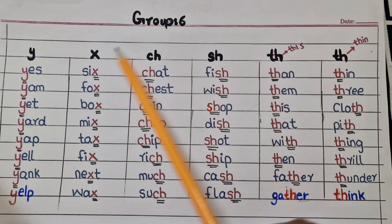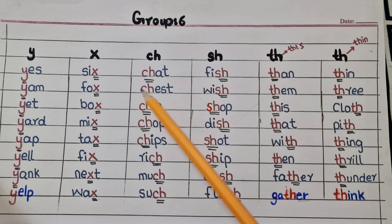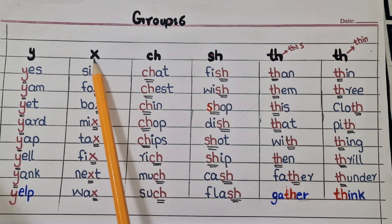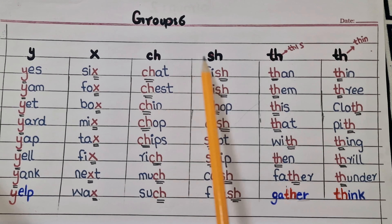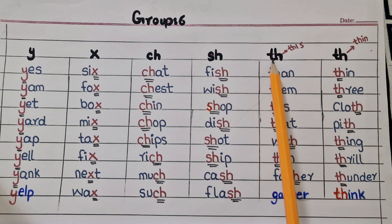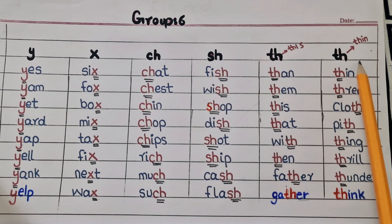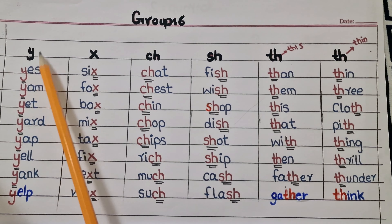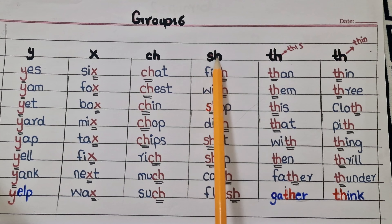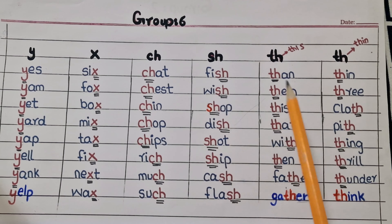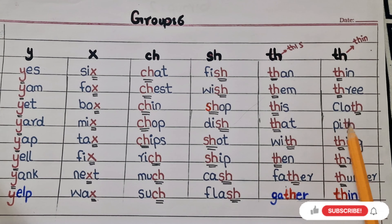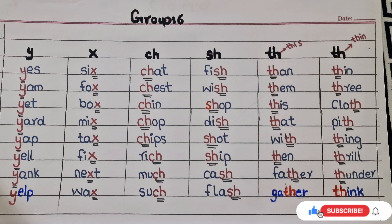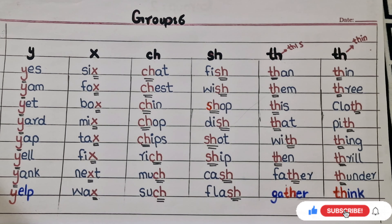These are all Group 6 letter sounds with their examples. Let's repeat again. Now watch this video again and try to remember these letter sounds, because these letter sounds are very important for a child to read bigger words. If this video is helpful for you, please like it, and don't forget to subscribe for more lesson updates. Thank you.